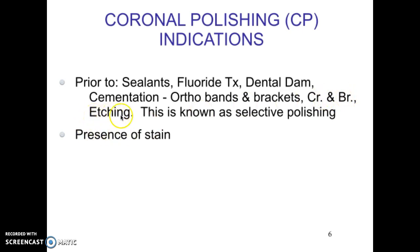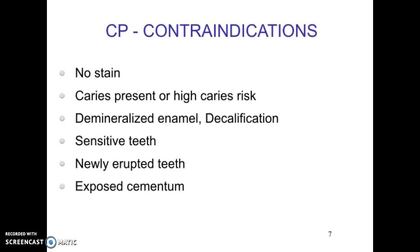When you polish only certain teeth — as in the previous procedures such as cementation, crown and bridge, or etching — this is known as selective polishing, where you're only polishing certain teeth. Sealants would also be included in that. And definitely if there's a presence of stain, polishing can be very helpful in removing it.